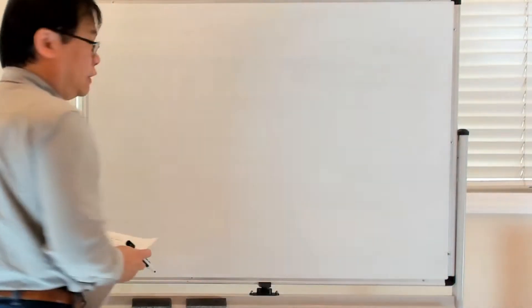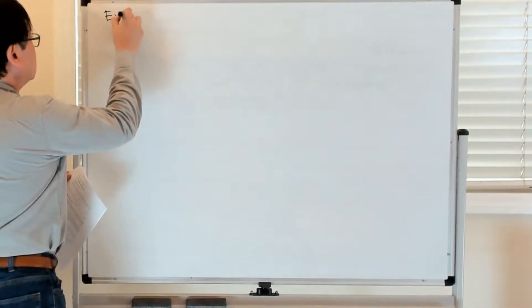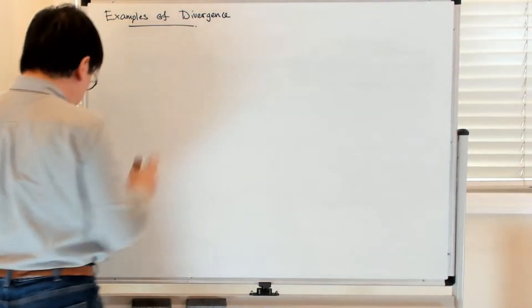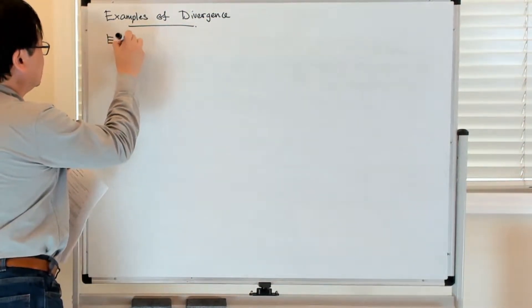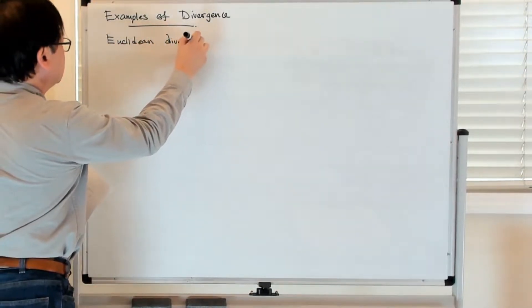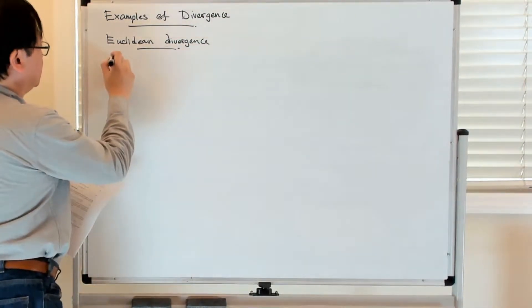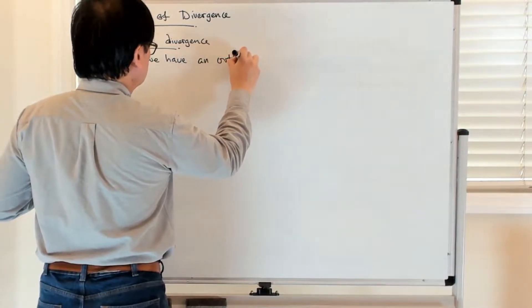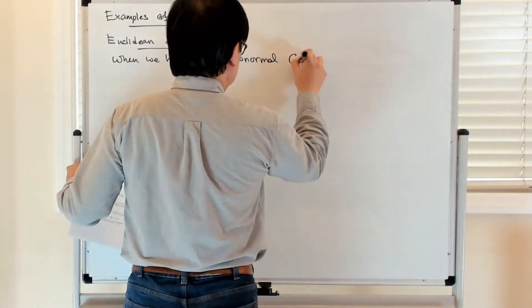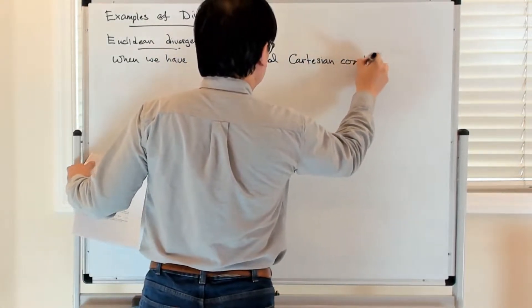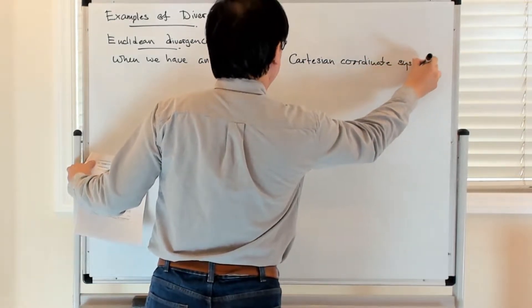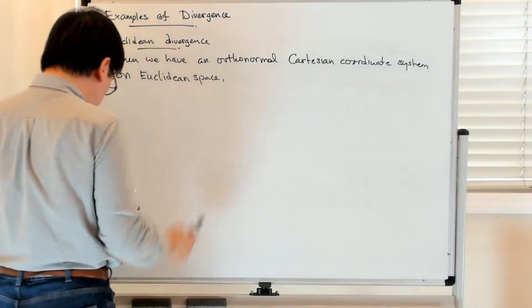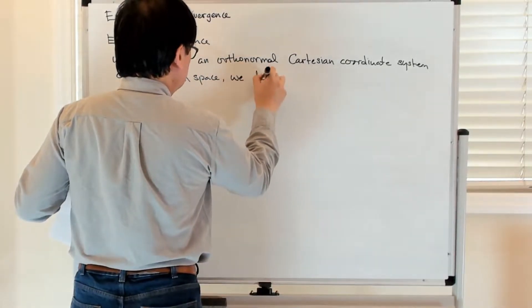All right, so now let's look at some examples of divergence functions. The simplest example is probably the Euclidean divergence. When we have an orthonormal Cartesian coordinate system on Euclidean space, we define a divergence as follows: